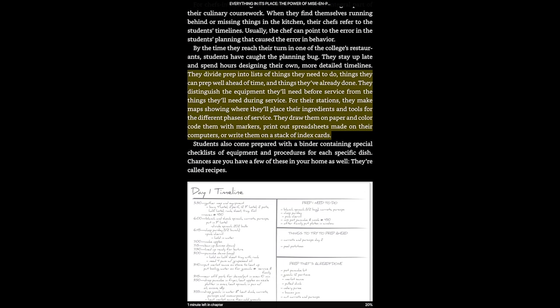You can see I jump another section. This highlight is just providing some additional detail: prep is divided into lists of things they need to do, things they can prep well ahead of time, and things they've already done — definitely some parallels to general productivity. They also distinguish the equipment they'll need before service from things they'll need during service. These are real details you wouldn't necessarily be able to guess just watching a cooking show. That's what I'm looking for — the secret stuff, the unintuitive stuff, the surprising things. That's often what you have to read a book for. What books can really provide is they can get into the meat of the ideas.